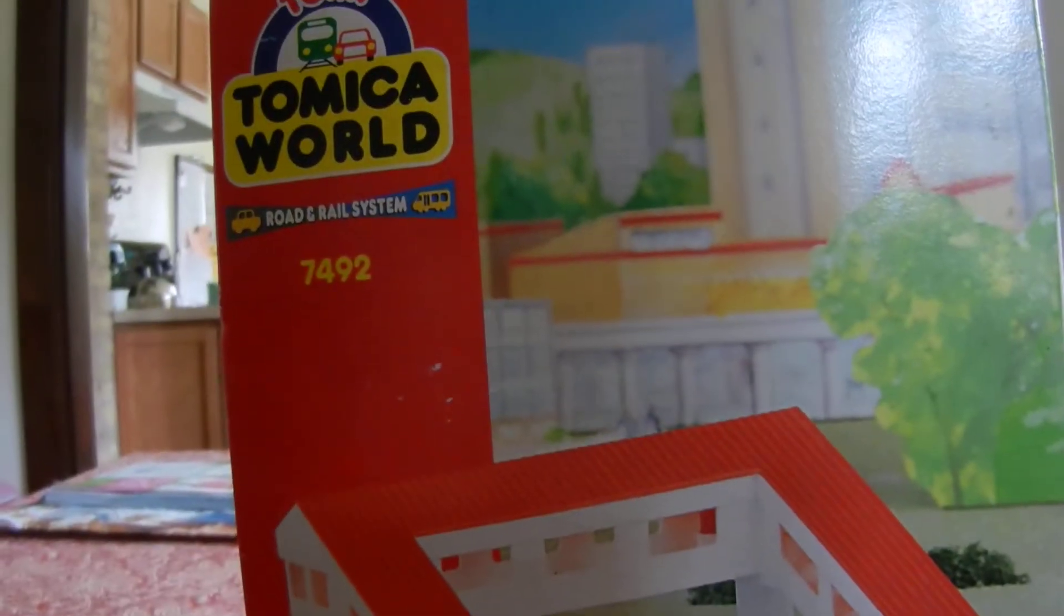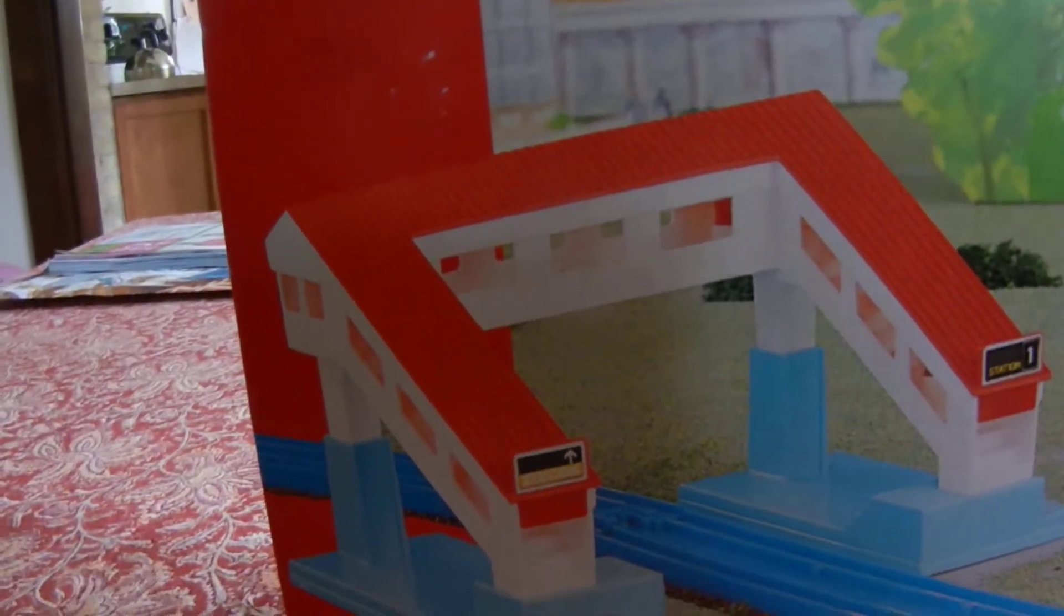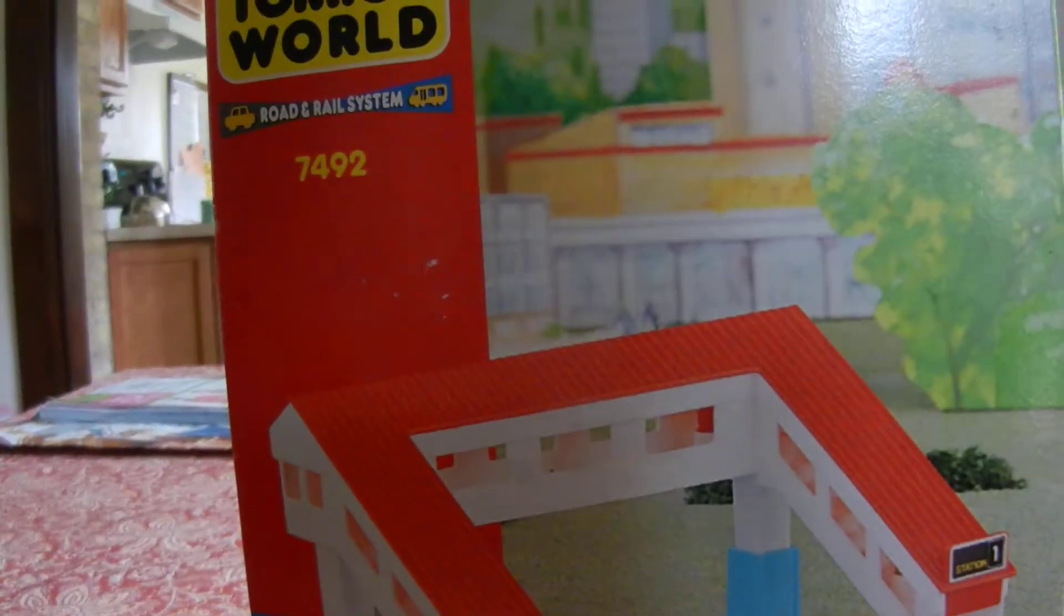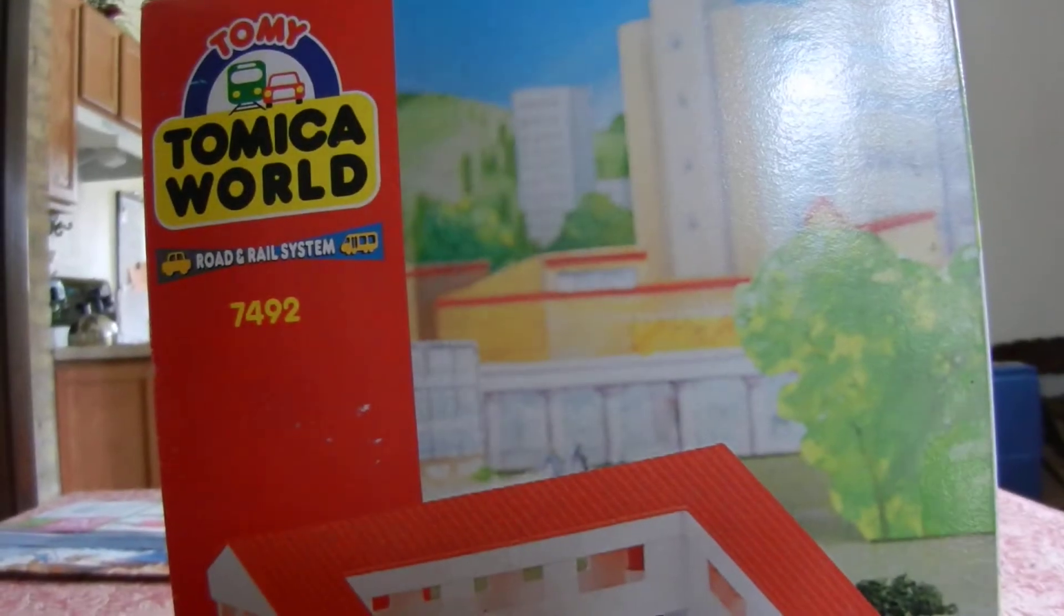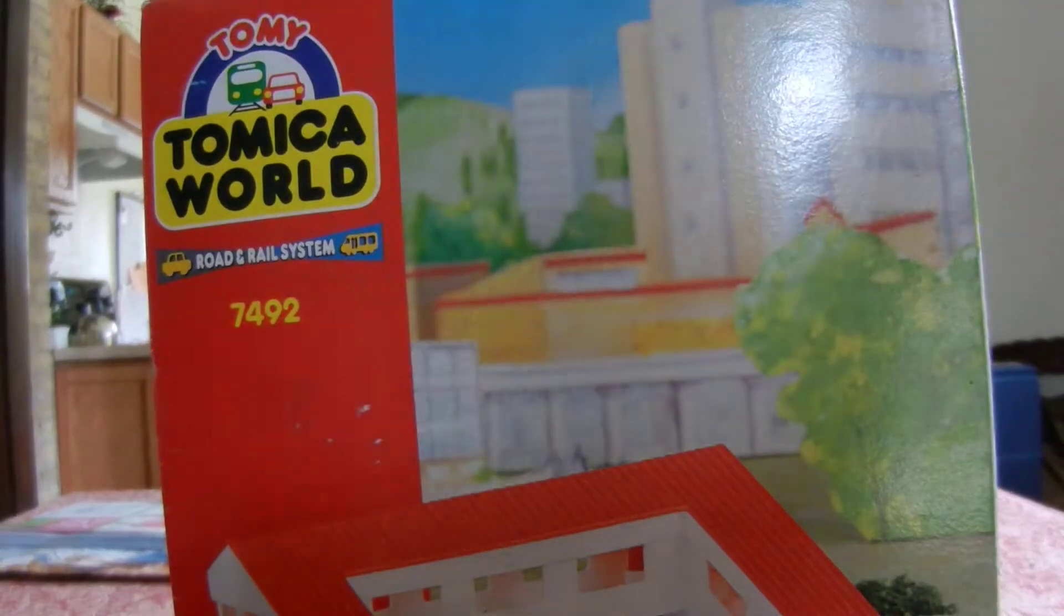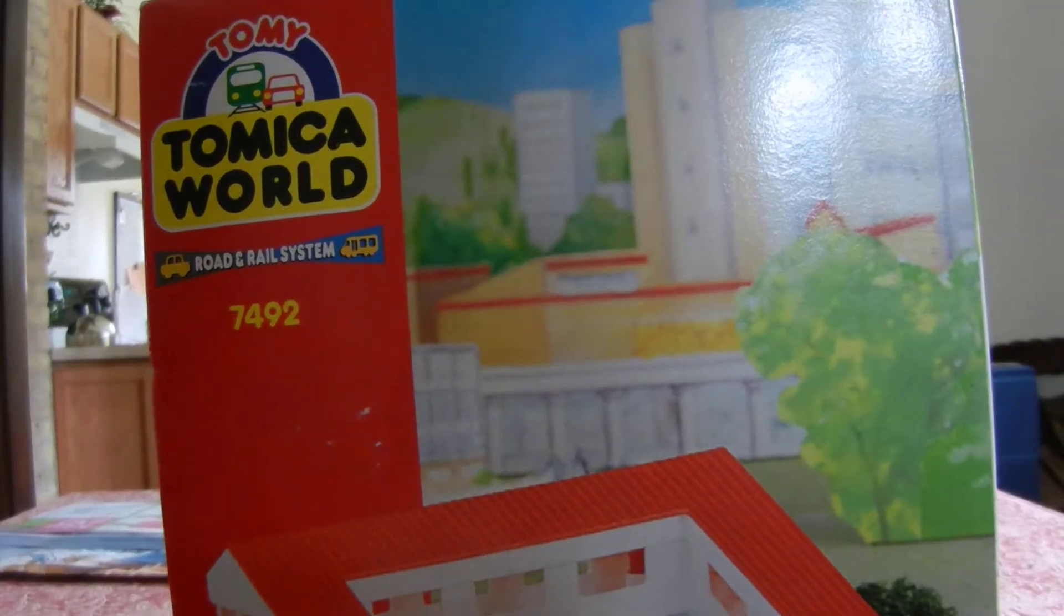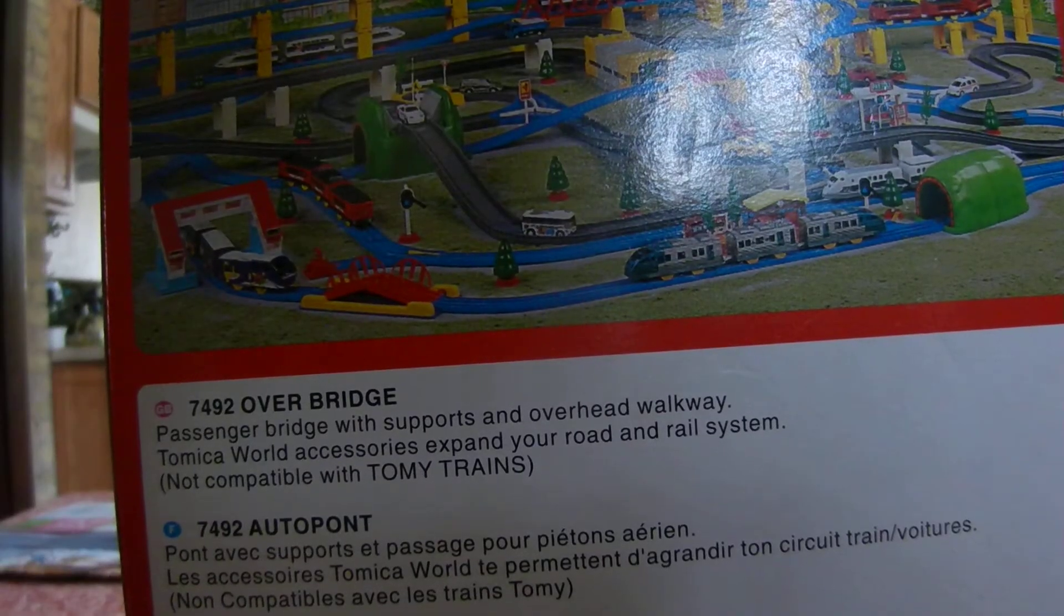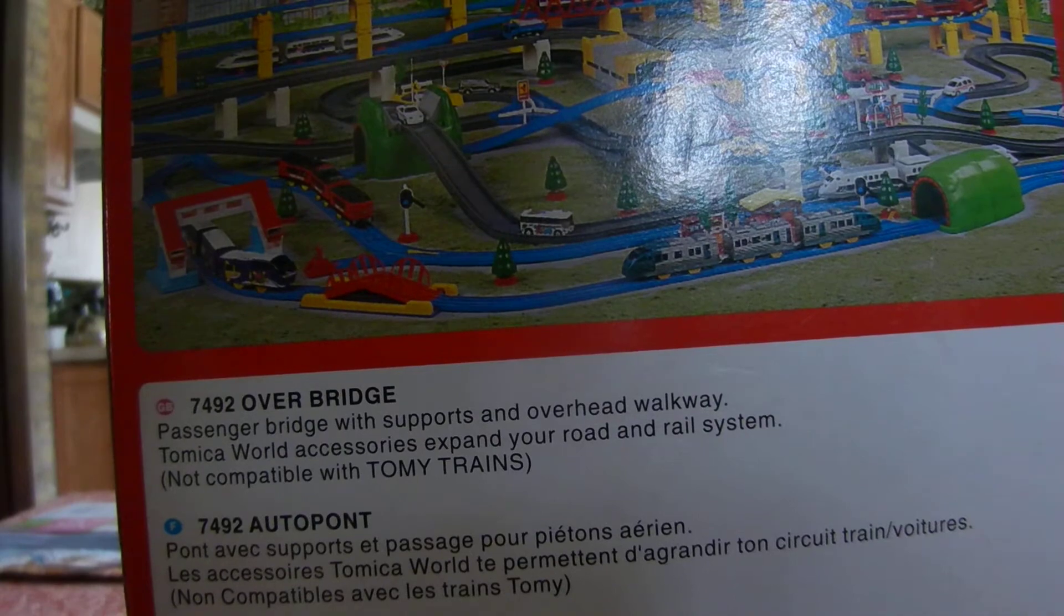Hi there, just doing a quick unboxing of a piece I have a special fondness for as it is from the Tomy red logo Tomica World road and rail system. This is the over bridge, a passenger bridge.